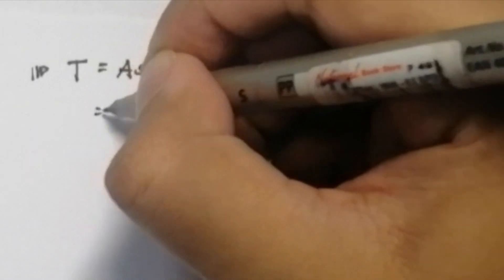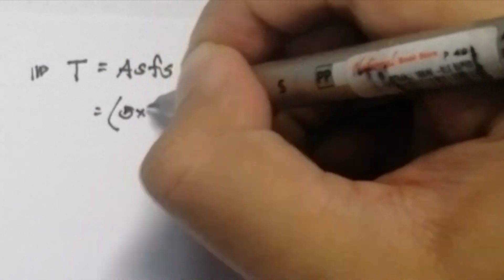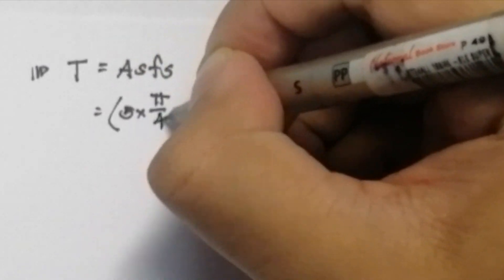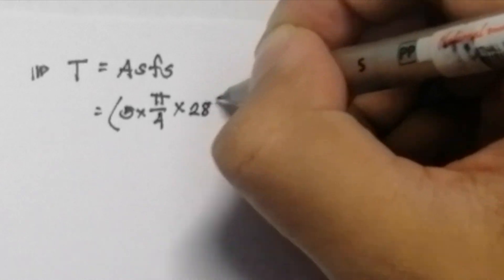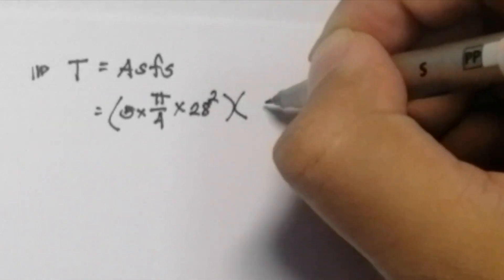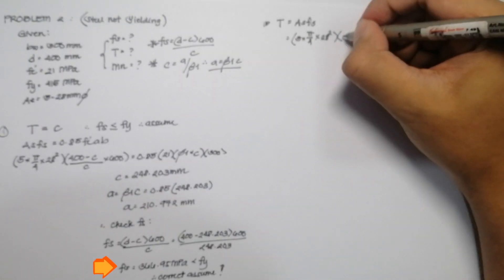For the second question, we are tasked to find the value of the tensile force in the beam. We can solve it by using the formula T is equal to As·Fs. Our area of the steel is 5-28 millimeter diameter reinforcing bars multiplied by Fs, which is 366.95 MPa.